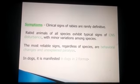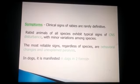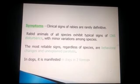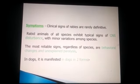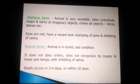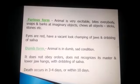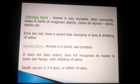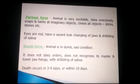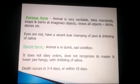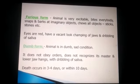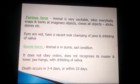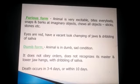Clinical signs of rabies in the definitive daily animal are excitability, typical with minor variation among species. The most notable sign regardless of species is excitability. In the furious form, the animal is very excitable, bites everybody, snaps and barks at imaginary objects, chews all objects, eyes are red with a vacant look, and there is drooling of saliva. In the dumb form, the animal is dull and sad, does not obey orders, does not recognize its master, lowers its head, and dribbles saliva. Death occurs within three to four days.